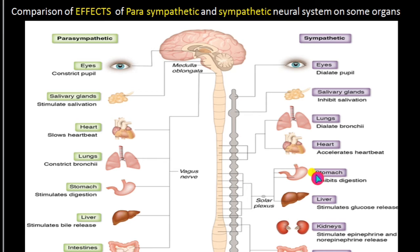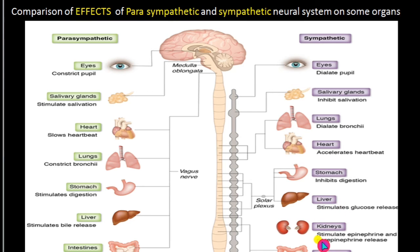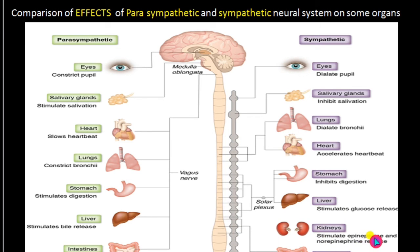In the liver, it stimulates glucose release — glucose is an energy-giving substance, so glucose formation will be stimulated in the liver during sympathetic innervation. In the adrenal glands, epinephrine and norepinephrine will be released. In the kidneys, urine formation will be inhibited.